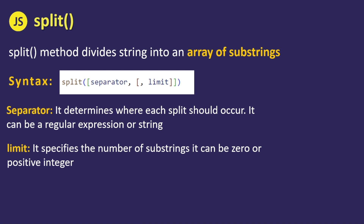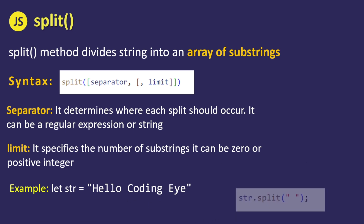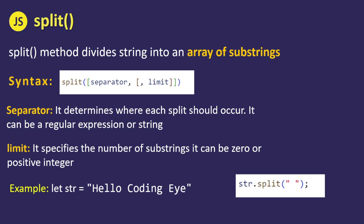The limit specifies how many substrings the string should be divided into. It can be zero, which returns an empty array, or a positive number, which returns that many substrings. For example, given the string 'hello coding i', applying str.split with a space as separator gives the output array: ['hello', 'coding', 'i'].